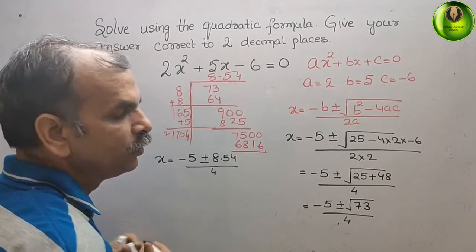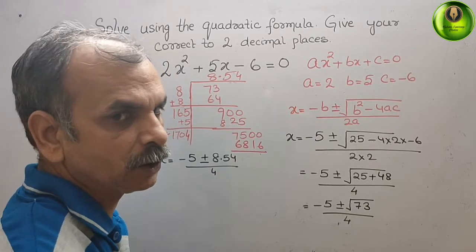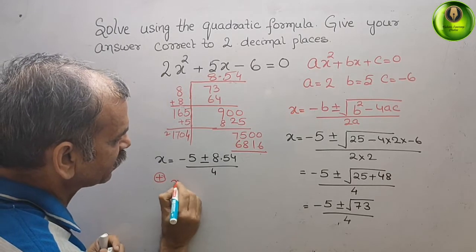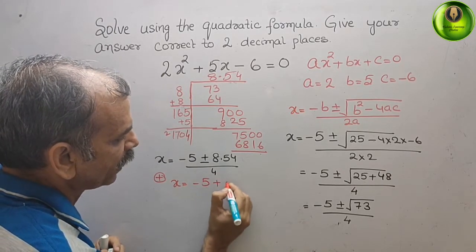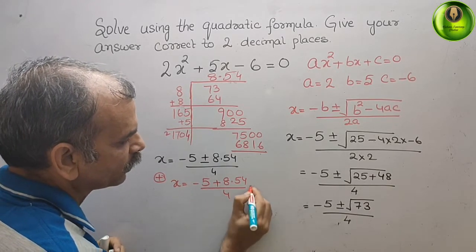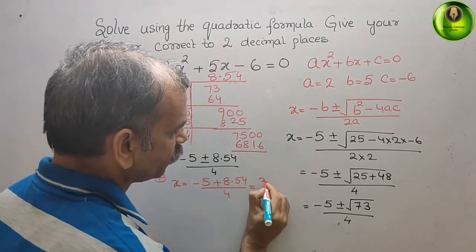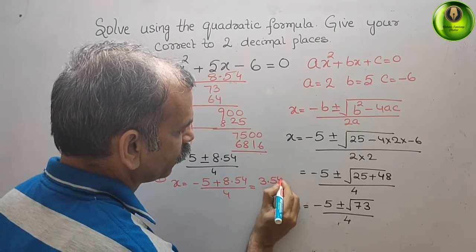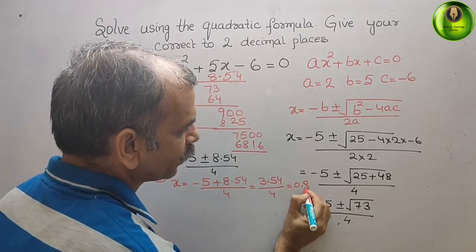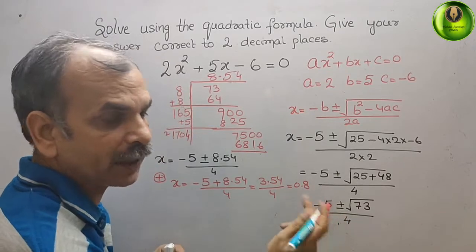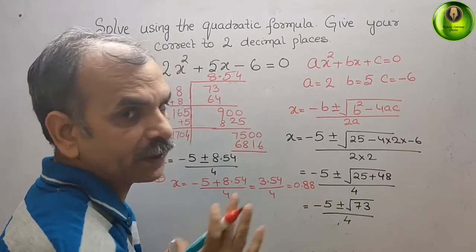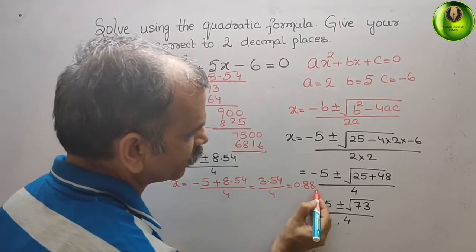What we will get? We get x = (-5 + 8.54) / 4. That is equal to, we can say, 3.54 / 4. That is equal to 0.8, is 32, 34 again, that means 8. So 0.88 is your first value in positive.